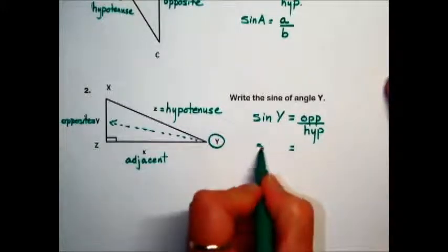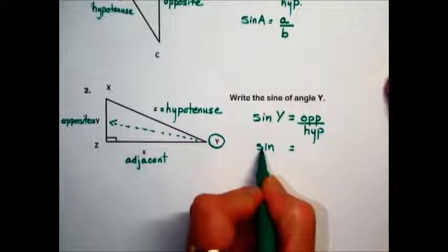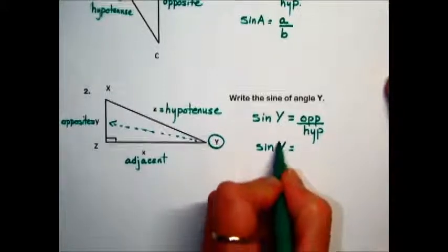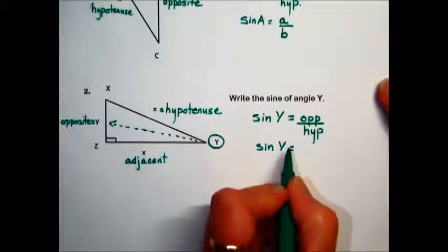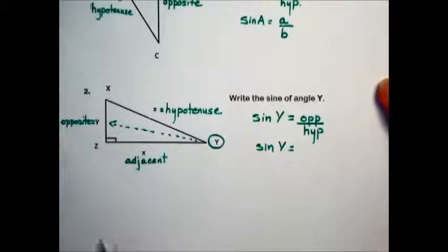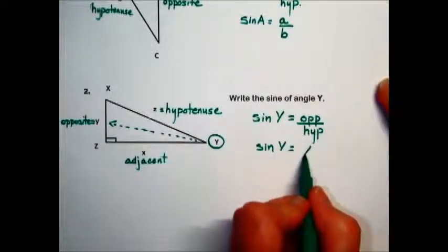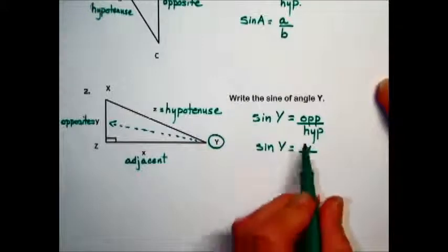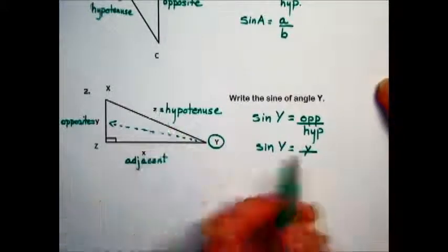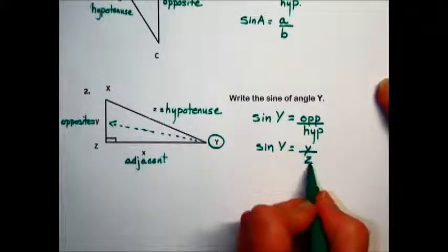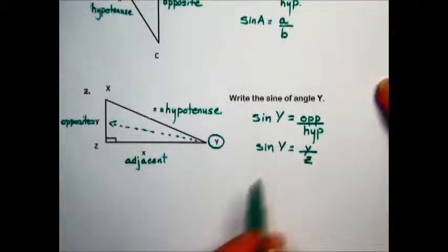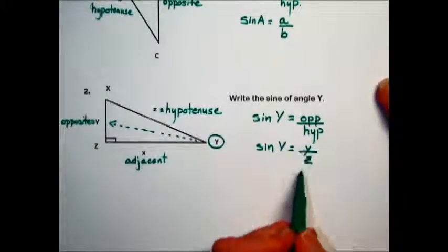So to find the sine of angle Y, the ratio, we'll find and replace the opposite with the value given in this triangle, lowercase y, over the length of the hypotenuse, which is represented with the variable Z. So the sine of Y is equal to y over z.